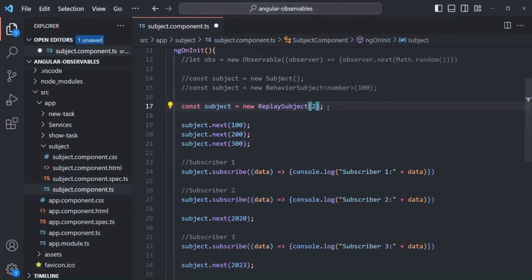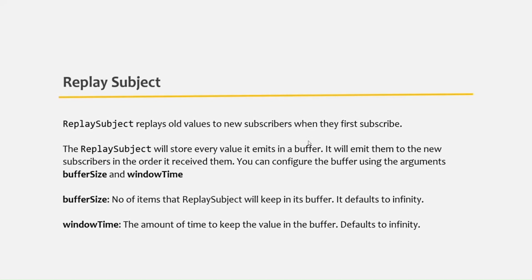So if you have a requirement where you don't want to specify any initial value for the subject, but you want to emit old values to all new subscribers, you can use ReplaySubject. If you want to specify an initial value, you should use BehaviorSubject. I hope now you know what ReplaySubject is, when to use it, and how it differs from BehaviorSubject. ReplaySubject takes two arguments: the first is buffer size, and the second is window time — how long to keep values in the buffer. By default, both are infinity, so previously emitted values remain in the buffer indefinitely.